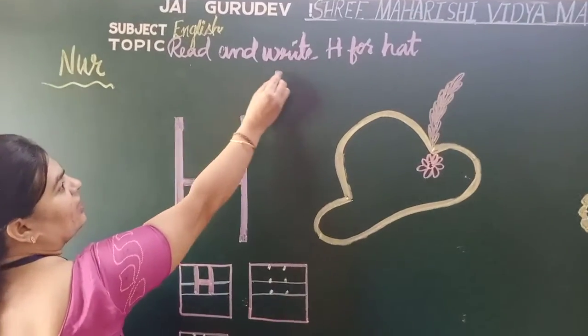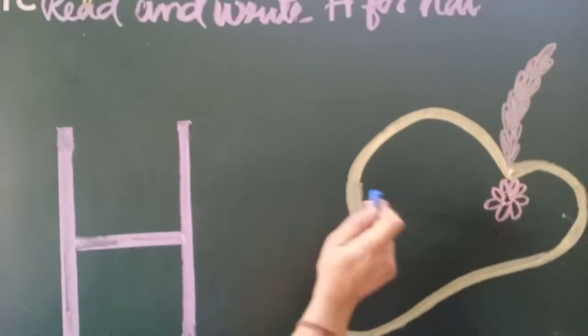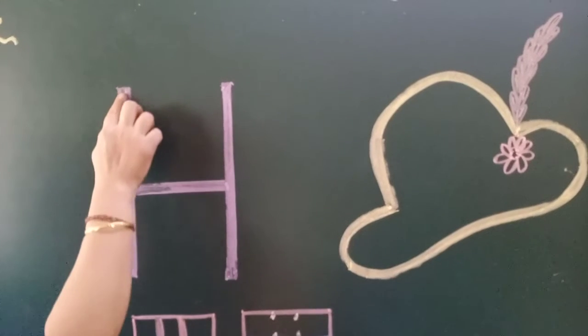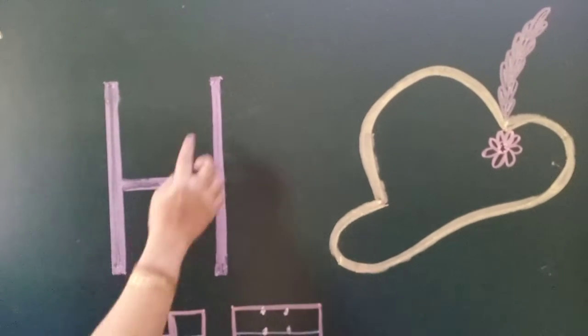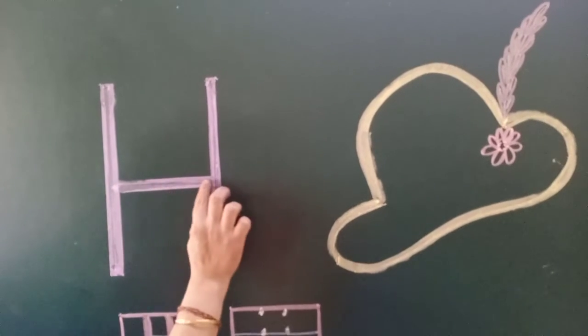Read and write H for hat. What is this? Hat. How we have to trace H? Standing line, another standing line, then slipping line.